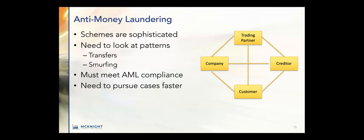For anti-money laundering, you need subject areas like trading partner, company, creditor, and customer. The schemes today are sophisticated — it's often multiple criminals working together across the world. We need to look at patterns of activity in real time, look at transfers and things like smurfing. We must also meet anti-money laundering compliance, and we need to pursue cases faster. All these reasons mean that we need this data mastered.